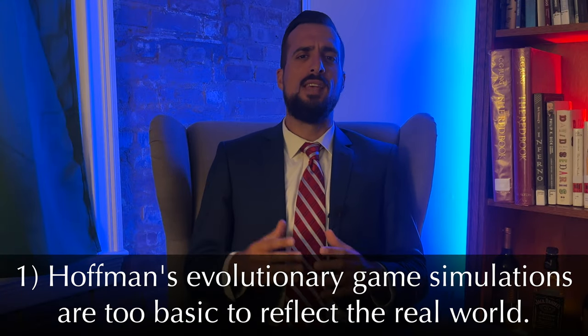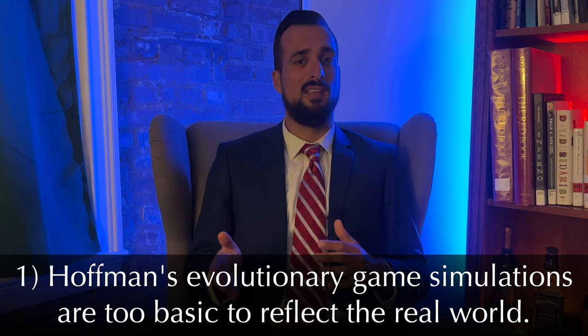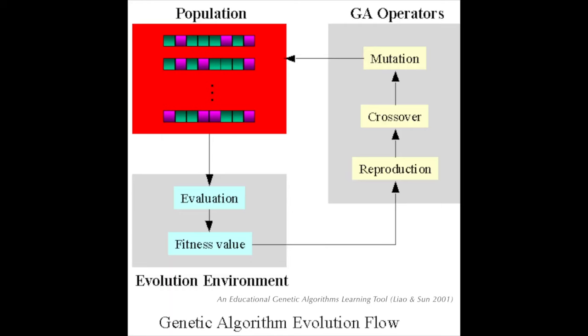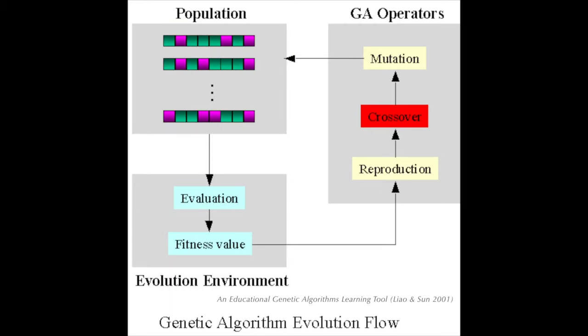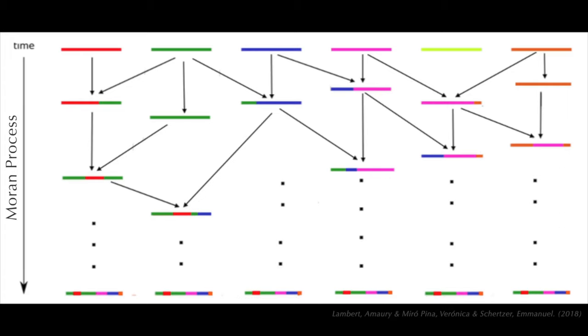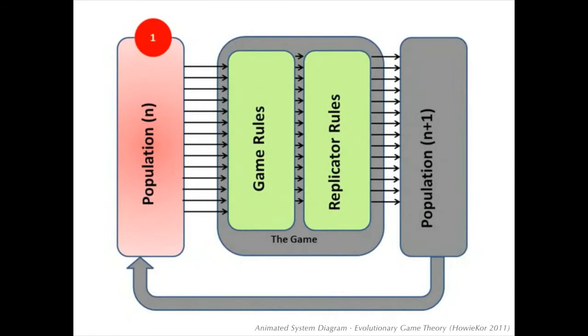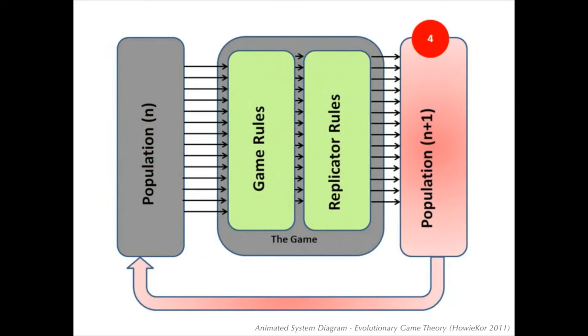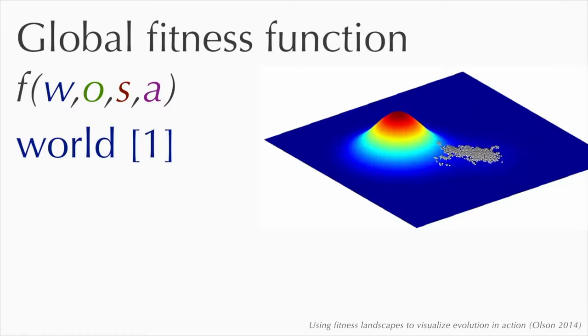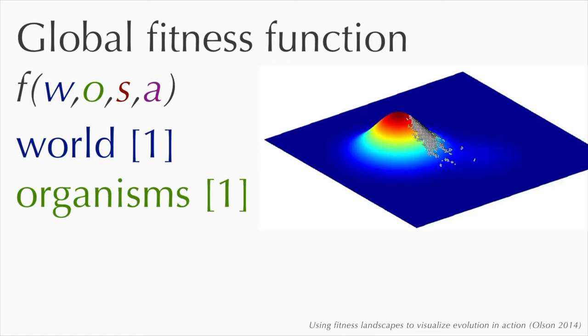Number one: Hoffman's evolutionary game simulations are too basic to reflect the real world. By necessity, Hoffman's game theory examples simplify interactions of biological organisms and their environments. You may assume that the more complex the game gets, the better it is for the truth strategy. But actually, Hoffman proves the exact opposite is the case.